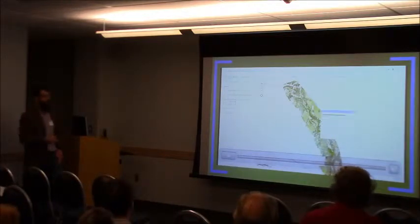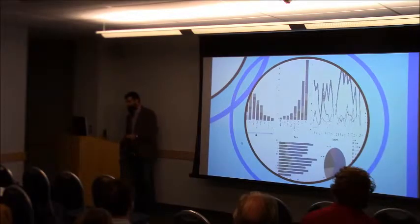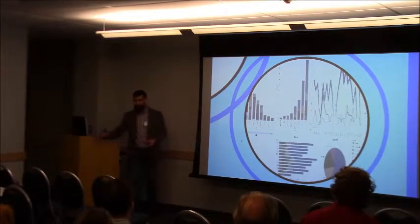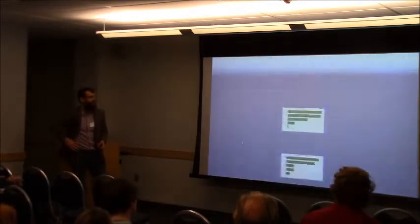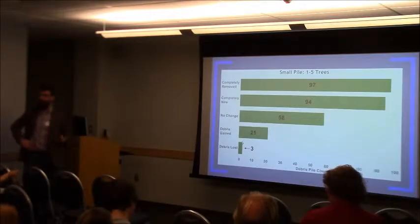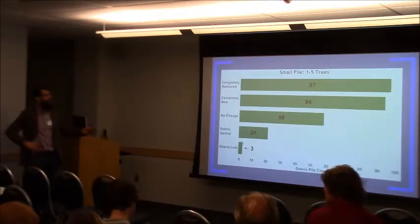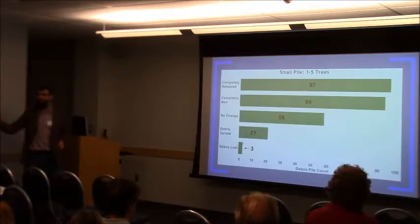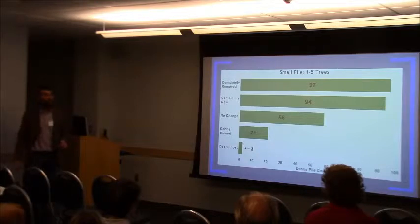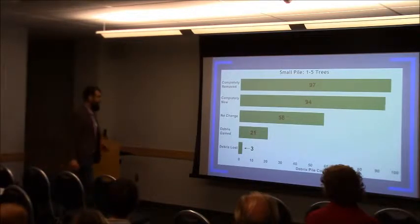You can click on a stream segment and find out information about the woody debris and how much is there. Looking at small piles — one to five trees — from June to July, pre-storm to post-storm: most of these small piles were completely gone from their location, either moved downstream into the Lamoille River or somewhere else. We also see a massive influx of new debris. Some didn't change at all — typically those higher up on slopes where floodwaters didn't reach.